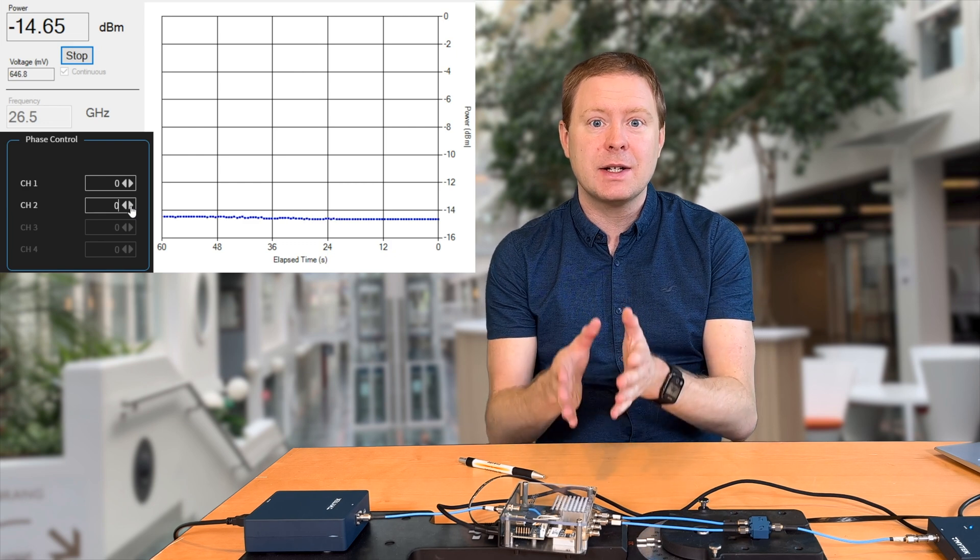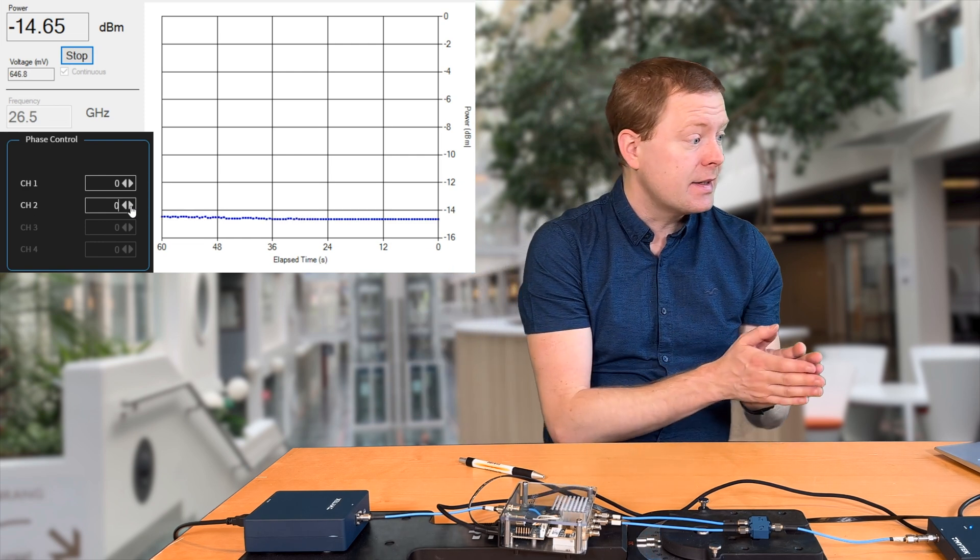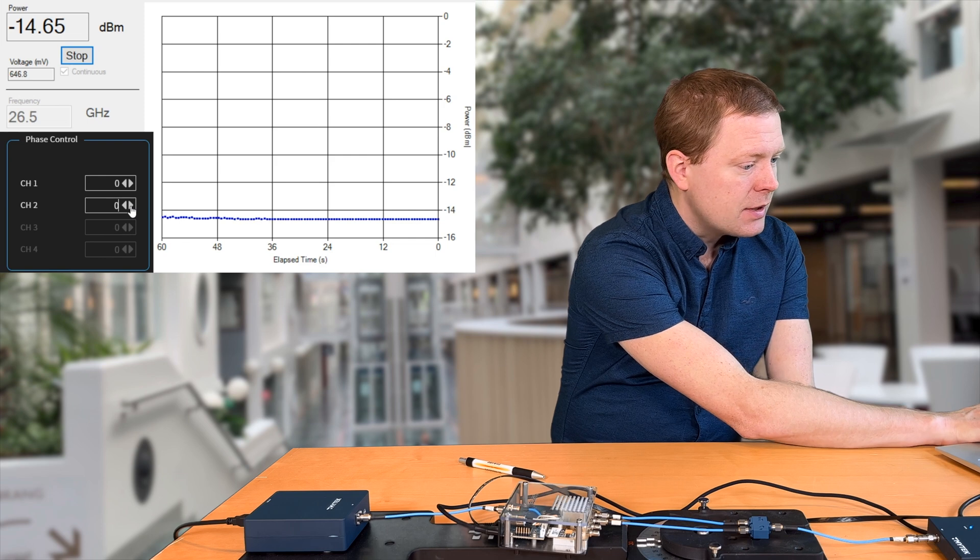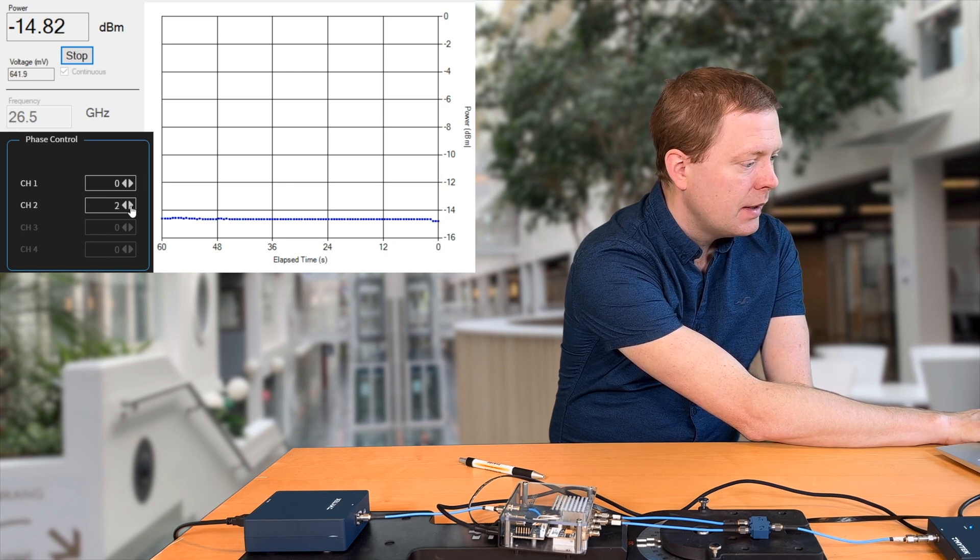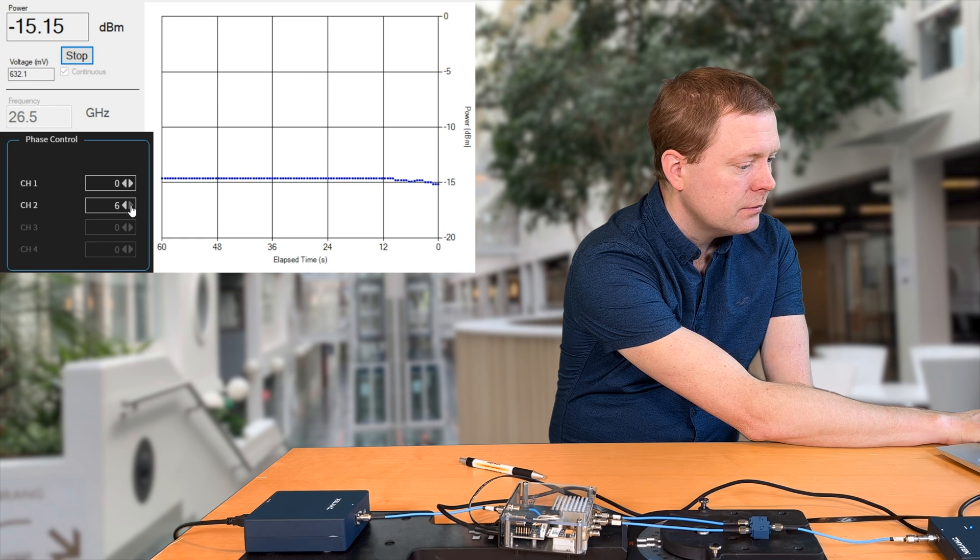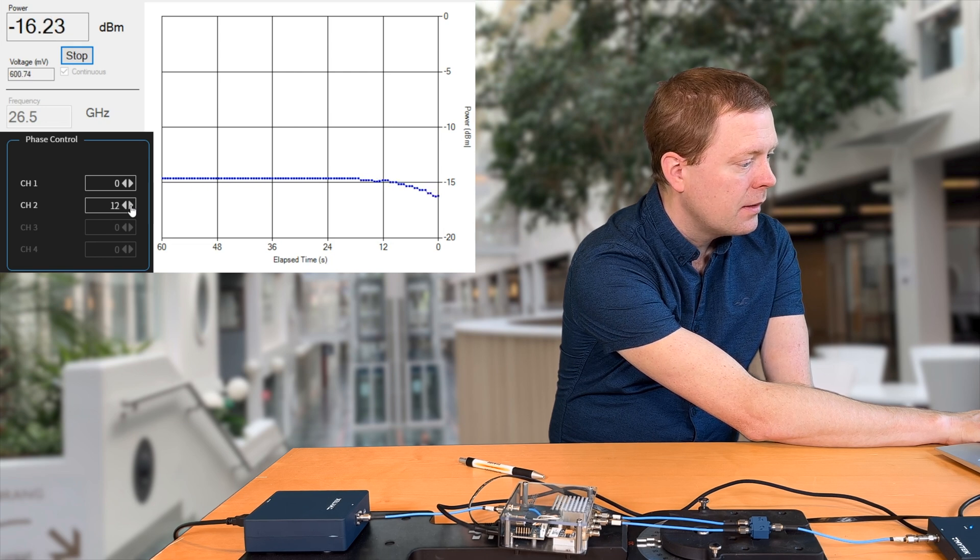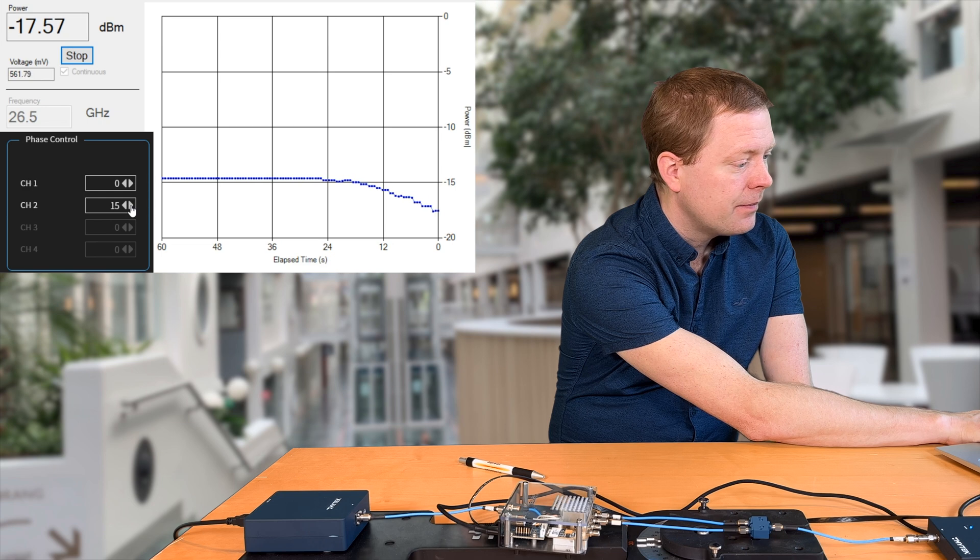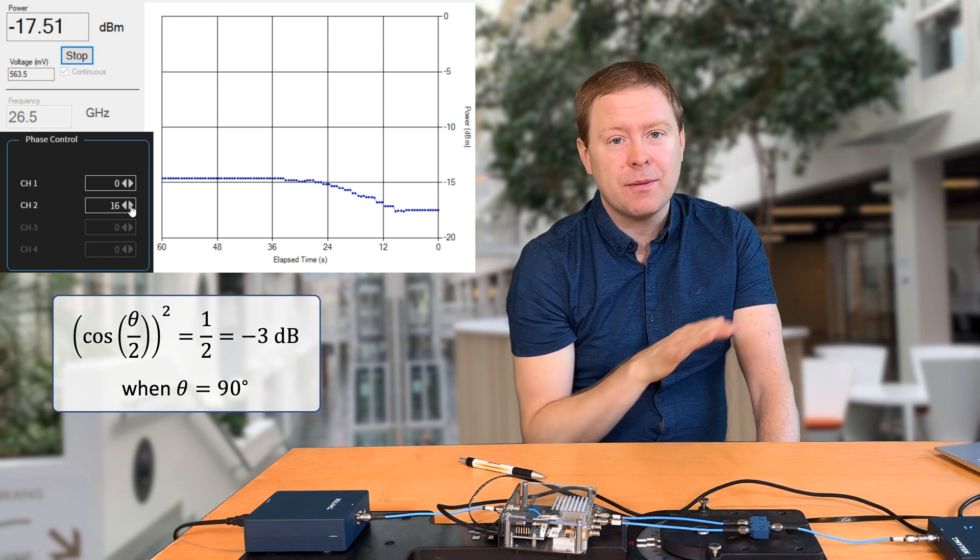When we start the experiment, there is no additional phase shifts happening in the beamforming unit. It is just taking the two received signals and adding them up and sending them to the power detector. In this case, we have minus 14.65 as our received power in dBm. I will now start to phase shift the second channel by one step, two steps, and we see how the received signal power is slowly reducing. Eight, nine, ten, eleven, twelve, thirteen, fourteen, fifteen, sixteen. And now we have phase shifted by 90 degrees, and we see that we get roughly a 3 dB loss here.